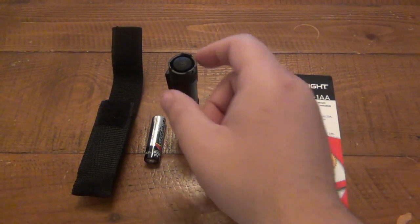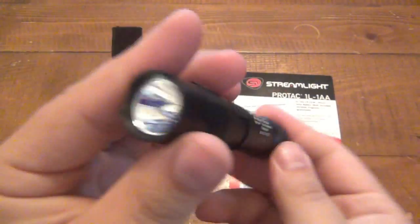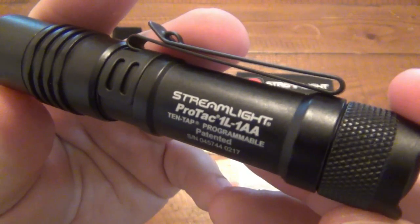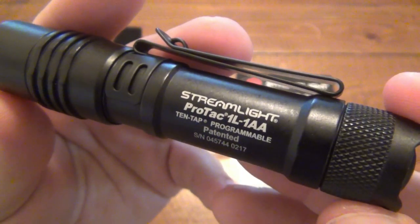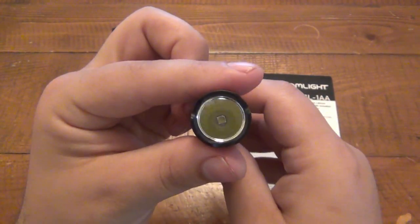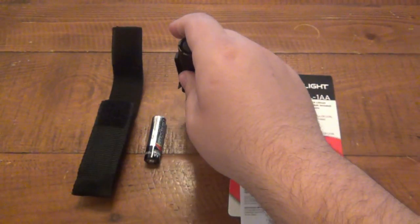Well today we're doing a video on this Streamlight. I recently bought this on Amazon and I wanted to talk about it. I think it's a very interesting flashlight. So this one is the Streamlight ProTac 1L-1AA. And I was first exposed to this by a viewer who told me about it. So yeah, this has some interesting features in it.